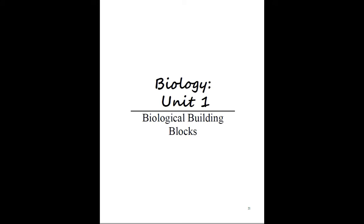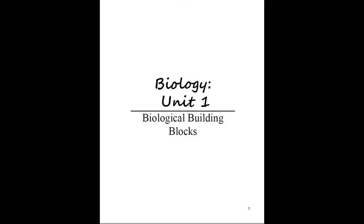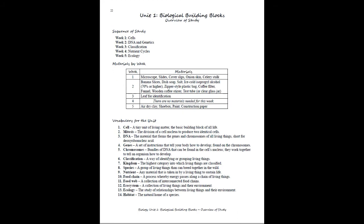At the beginning of each unit we'll have unit overview sheets in the teacher's guide. This sheet covers the sequence of study — what the unit is going to cover — and the materials you're going to need, so you can gather everything at the beginning of the unit. If you have the experiment kit, you'll know what you need for those weeks, or you can pull them week by week. Then we'll have the vocabulary for the unit.